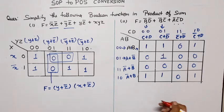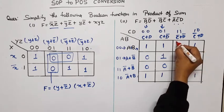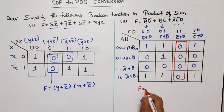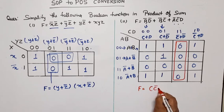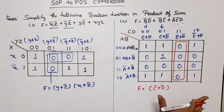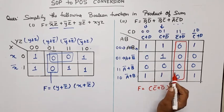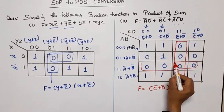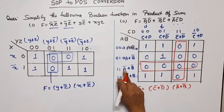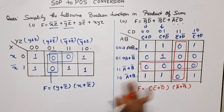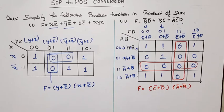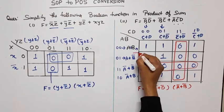Now let's form quads to cover all maxterms. The first quad gives (c̄+d̄) from this column. Next, we need to cover remaining maxterms. A quad of four zeros gives (ā+b̄) from this row. Two maxterms remain; rather than a pair, we can form a quad by wrapping back-to-back. We prefer quads over pairs, so we use the quad.